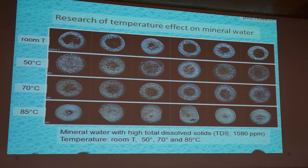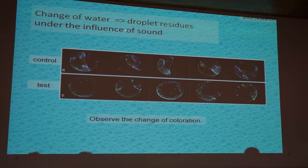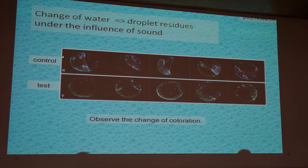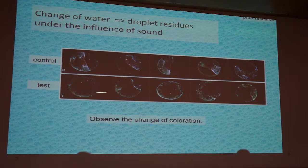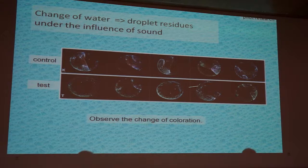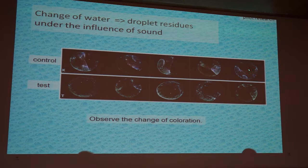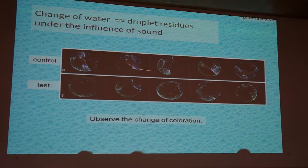We studied further the influence of sound on droplet residue formations. Here is a control tap water and the water subject to sound. The structures of these two rows are not very different; however, you can see a very interesting color shift — from this row, where there is much blue or even violet, to this row, where green predominates. This is the test and this is the control.